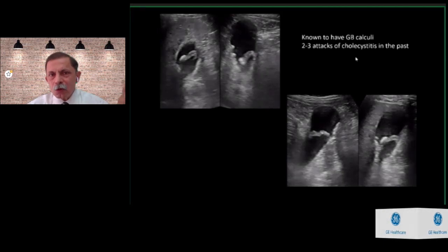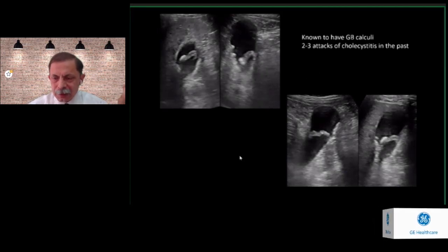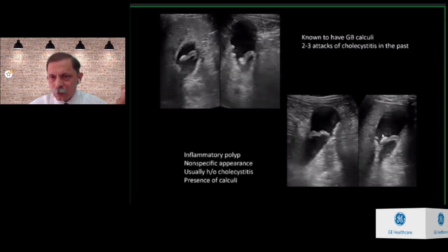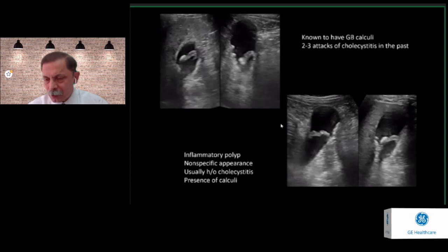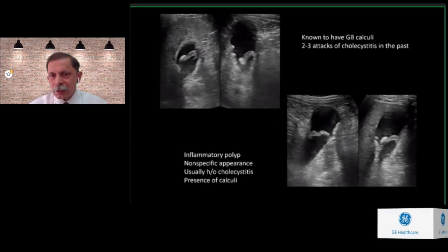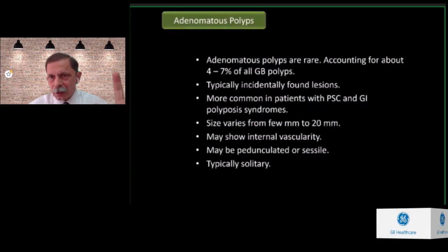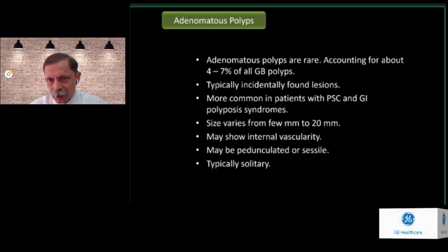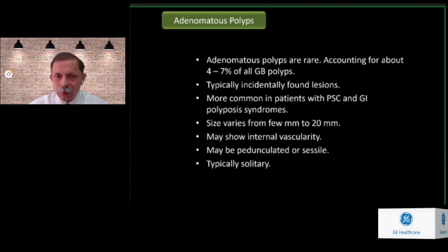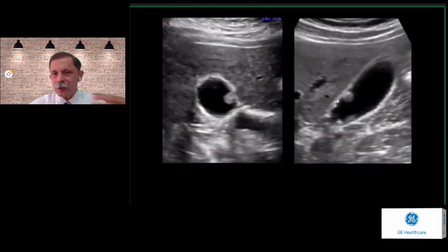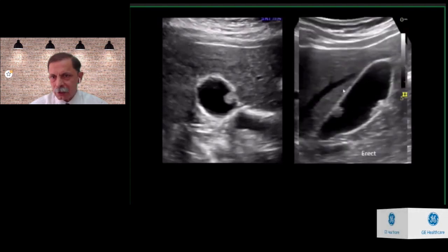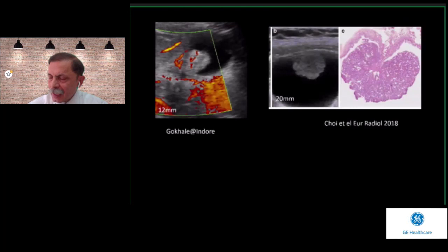A patient with known gallbladder calculi and several past attacks of cholecystitis showed both stones and a polyp — this turned out to be an inflammatory polyp. Inflammatory polyps have a non-specific appearance; usually there is a history of cholecystitis and stones are present. Adenomatous polyps are rare, accounting for 4–7% of all gallbladder polyps, more common in patients with primary sclerosing cholangitis or GI polyposis syndromes. Size varies from a few millimeters to 20 mm, may show internal vascularity, may be pedunculated or sessile, and are typically solitary.